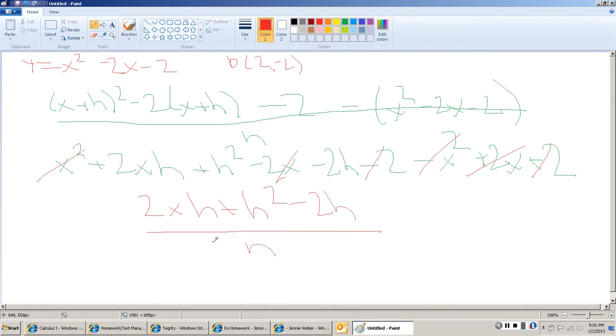Now, we can cancel. We've all got an h. We can cancel some h's, and we're left with 2x plus h minus 2.